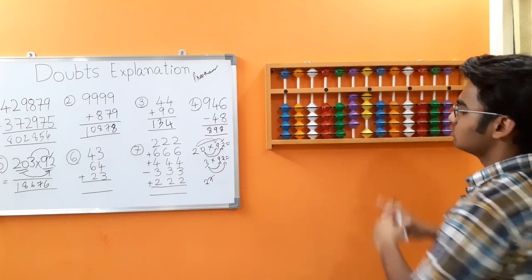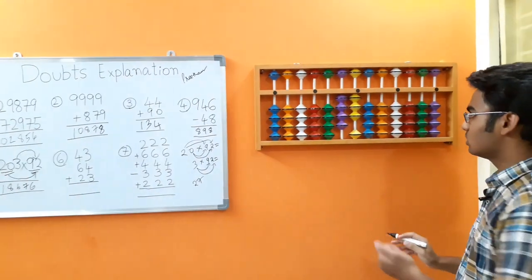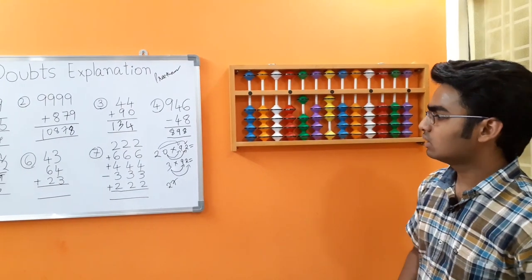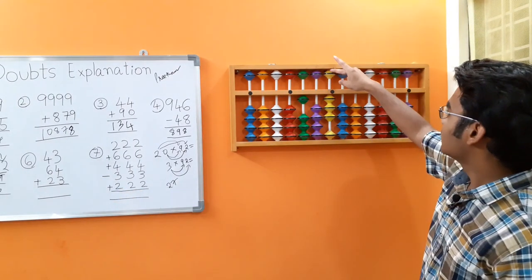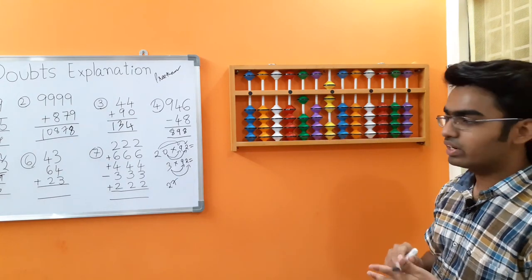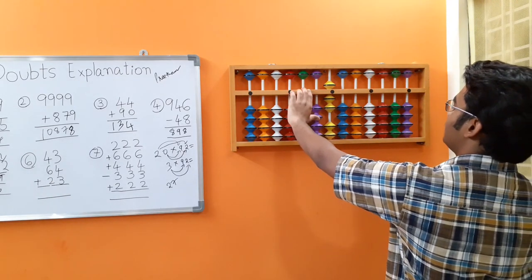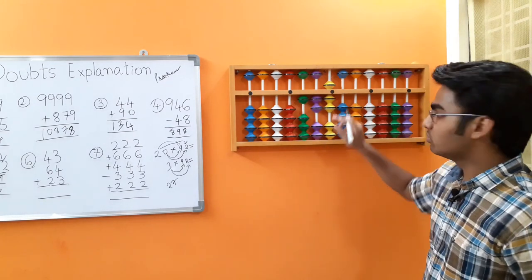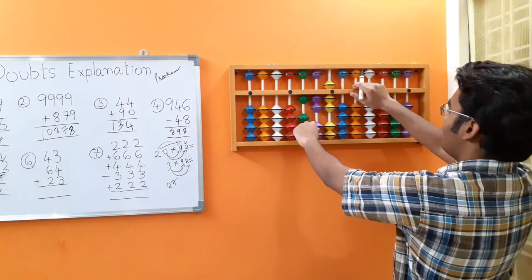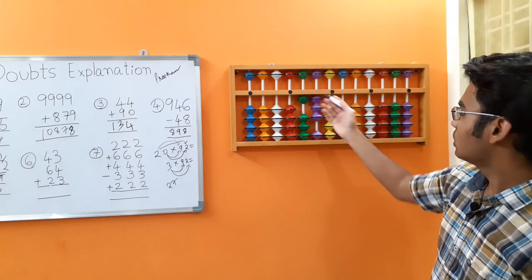I have placed 43. Adding 64: we cannot add 6 directly on the tens rod, so make use of big friends concept — add the boss 10, less 6's friend 4. Next, 4 on the units rod: add the boss 5, less 4's friend 1 — 4's friend in small friends is 1. Next, 23: we can add 2 directly on the tens rod because this rod was empty. Then add the boss 10, less 3's friend 7. We got the answer as 130.